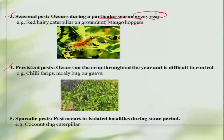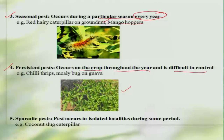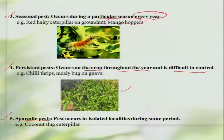Some pests are referred to as persistent pests, which persist on the crop throughout the year and are quite difficult to control. For example, chili thrips on chili — this pest occurs persistently, causing damage right from germination to the harvesting period. The fifth category is the sporadic pest, where the pest occurs in isolated localities during some periods of time. A good example is the coconut slug caterpillar.